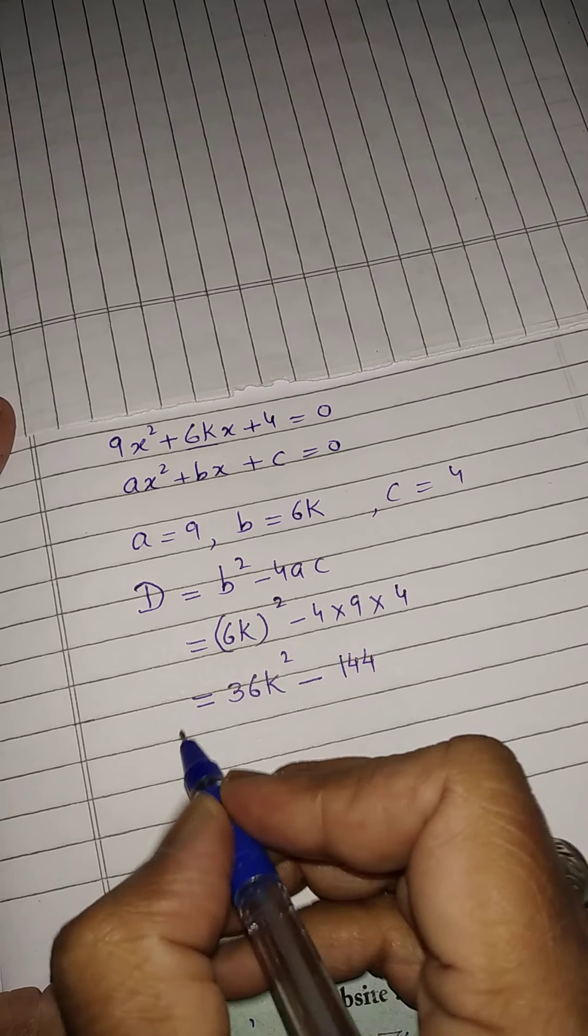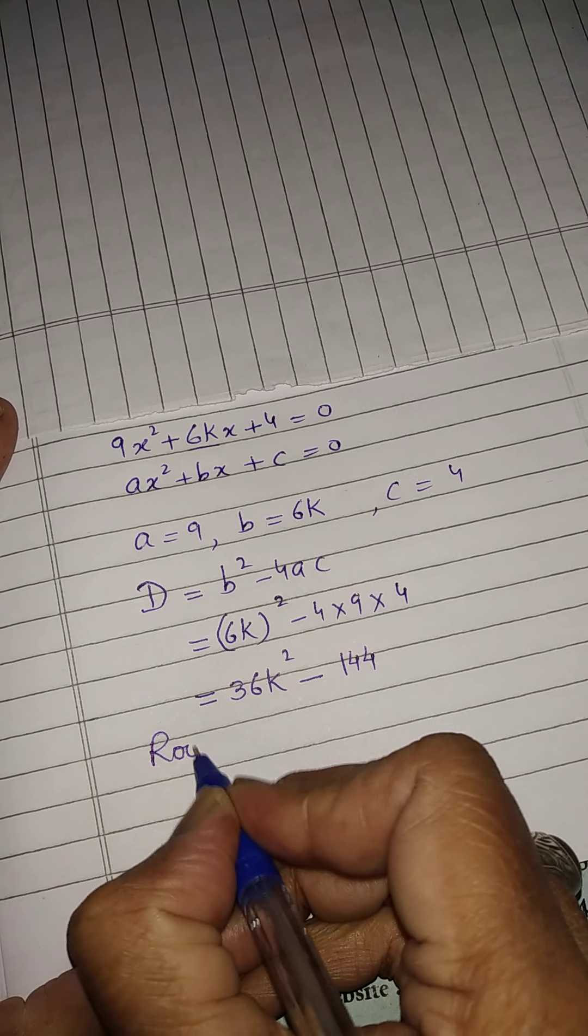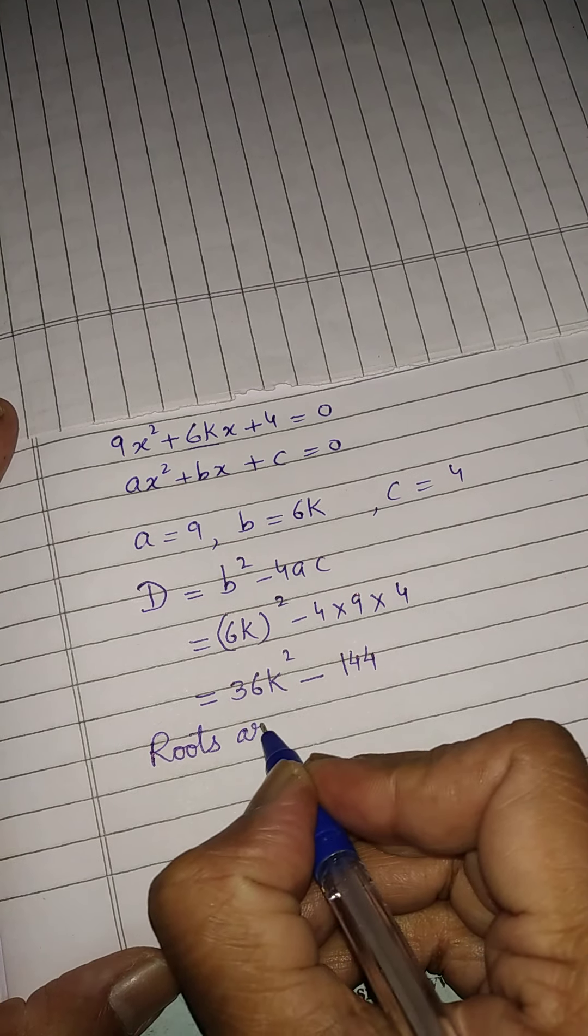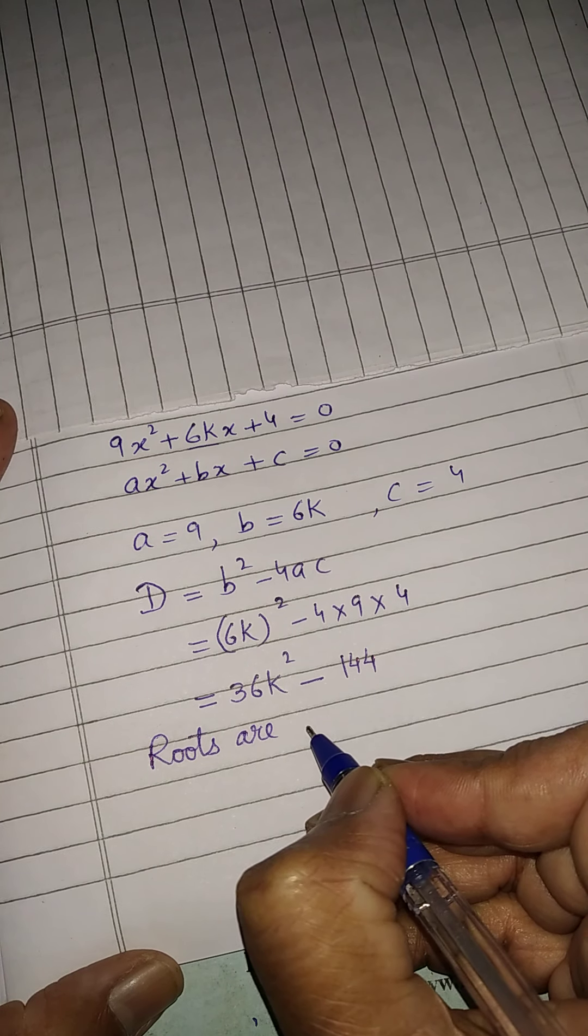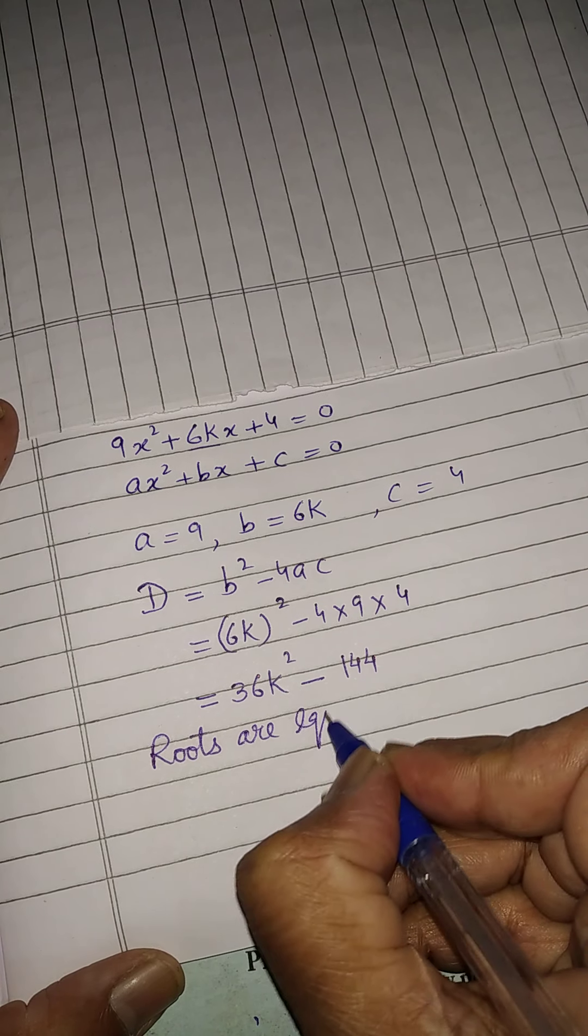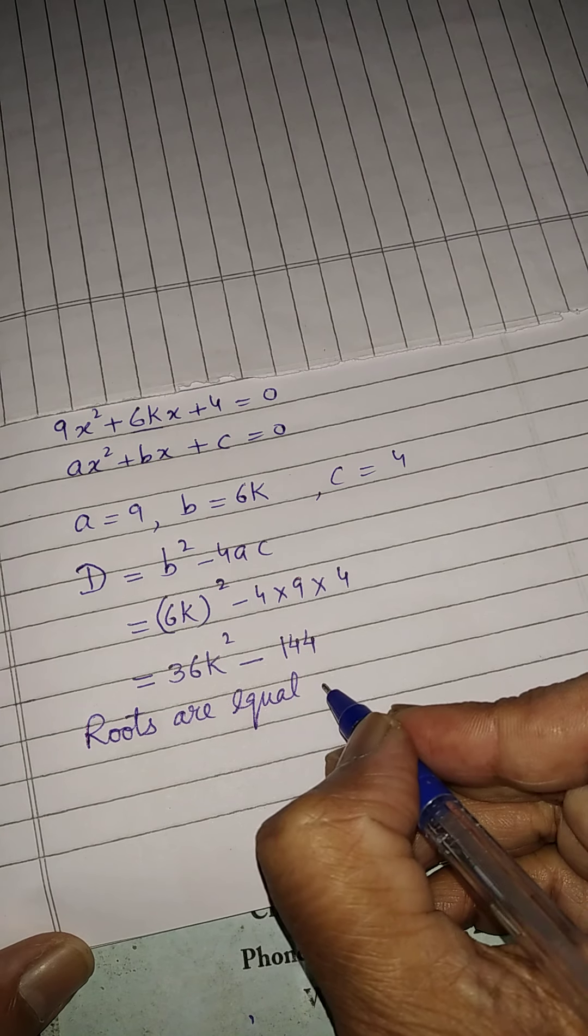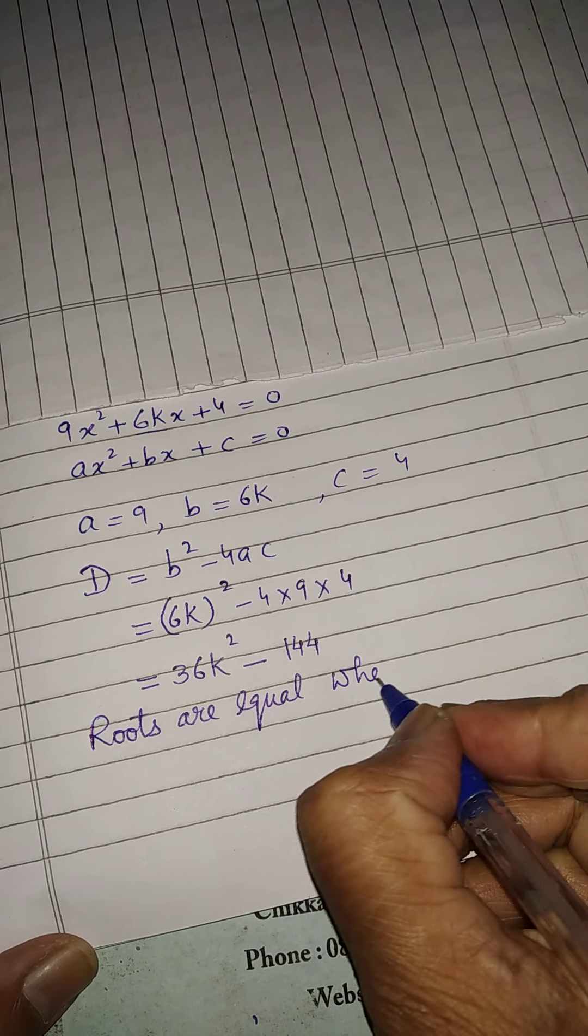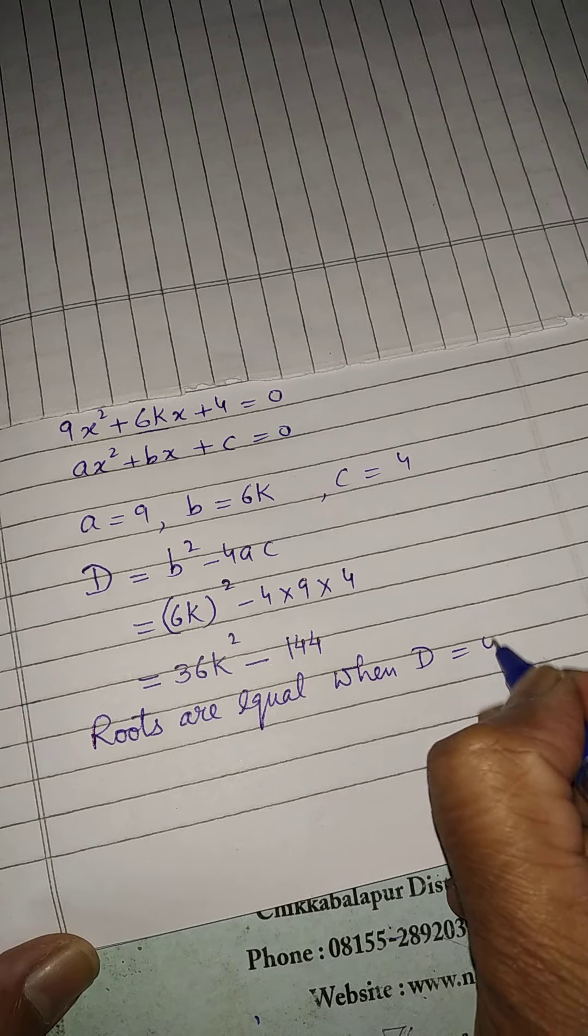After that, we will write roots are equal, they will be real and equal both. So, roots are equal when D is equal to 0.